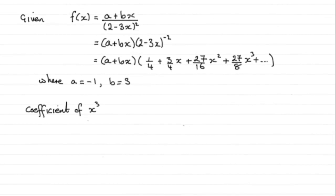Now for the last part of this question, we already know that f of x from the previous part was defined as this binomial expansion and we discovered that a was minus 1 and b was 3. But we've now got to find out what the coefficient of x cubed is in this expansion.